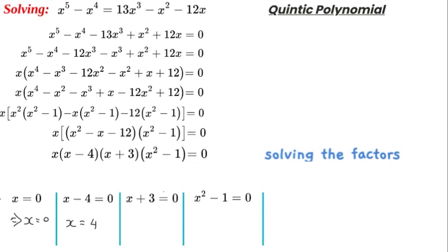For x + 3, x = -3. For x^2 - 1, we bring across the 1, so x^2 = 1. Square root both sides, we get x = ±1.